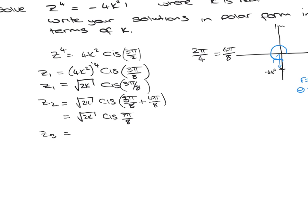The third root, remember the modulus always stays the same. And this time we're going to have 7 pi over 8 plus 4 pi over 8, which gives us 11 pi over 8.